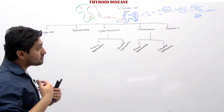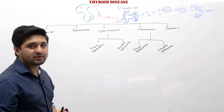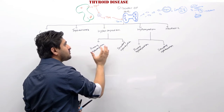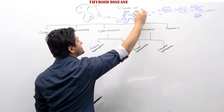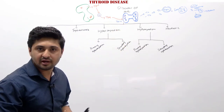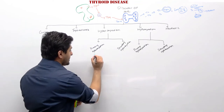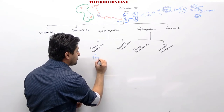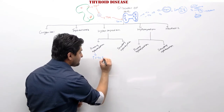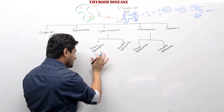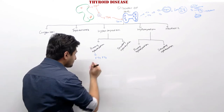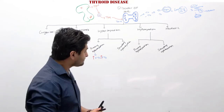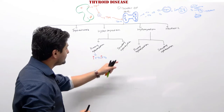In primary hyperthyroidism, the thyroid gland itself is hyperactive and producing high levels of T4. Looking at lab values, free T4 is always going to be high, and so is free T3. Both free T4 and free T3 are elevated in primary hyperthyroidism.